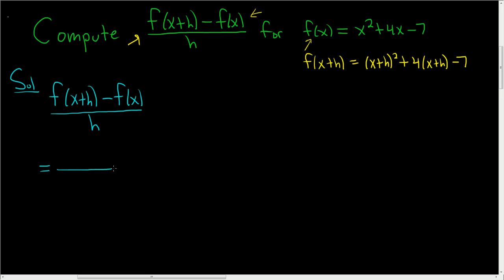This is equal to, now f of x plus h, we already worked it out, it's over here. So it's going to be x plus h squared, and then plus 4 times x plus h, and then minus 7.